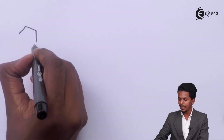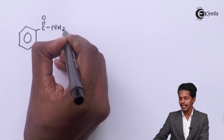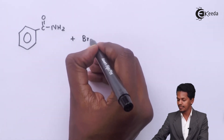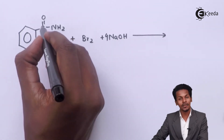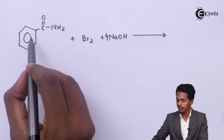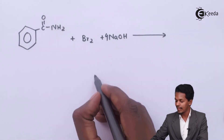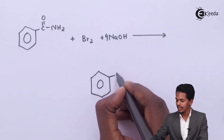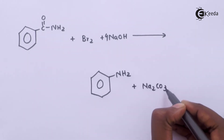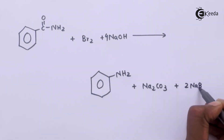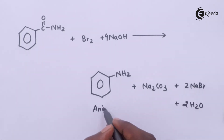Suppose we take an aromatic amide — here I am considering benzamide, that is benzene-C(=O)NH2 — and react it with bromine in the presence of 4 moles of NaOH. The reaction proceeds such that the carbonyl carbon degrades, and the benzene ring instead of being attached via C=O gets attached directly to the nitrogen atom. The main product we get is aniline, benzene-NH2, along with Na2CO3 as sodium carbonate, 2 moles of NaBr, and 2 moles of H2O.